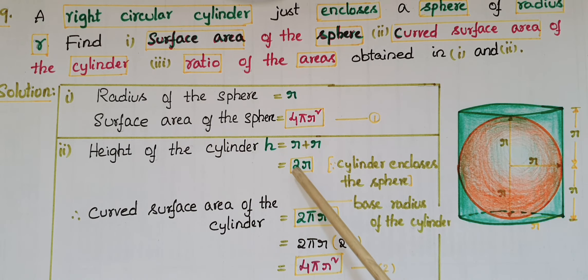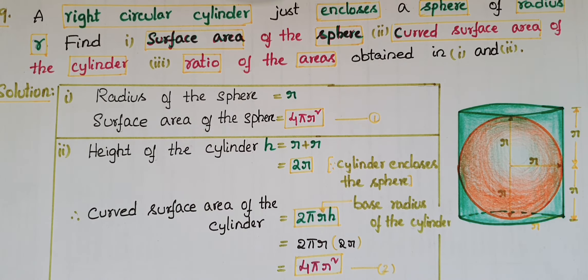And the curved surface area of the cylinder is equal to 2πrh. That is equal to 2πr into h value is 2r, that is 4πr². Therefore,